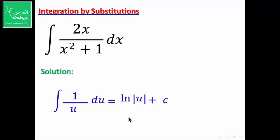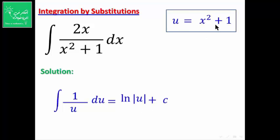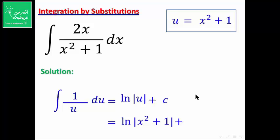تكامل (1/u) du = ln|u| + C. الآن نتذكر الفرضية من بداية الحل: u = x² + 1. نعوض: الجواب = ln(x² + 1) + C.